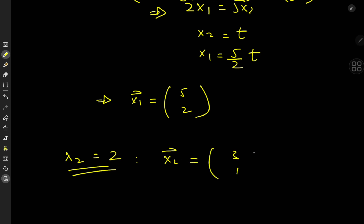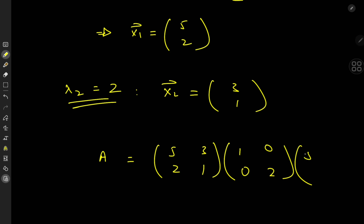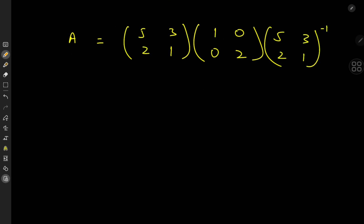So we have matrix A diagonalized: A = P D P⁻¹, where P has columns x₁ and x₂, giving P = [[5,3],[2,1]], the diagonal matrix D = [[1,0],[0,2]], and P⁻¹ is the inverse of [[5,3],[2,1]]. By the way, I've pretty much removed the filter from my YouTube videos which is kind of cool.